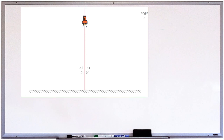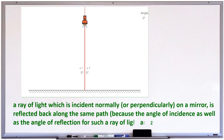Here, the incident ray is perpendicular to the plane mirror — that is, the angle of incidence is 0 degrees, and the angle of reflection is also 0 degrees. What we conclude: a ray of light which is incident normally or perpendicularly on a mirror is reflected back along the same path, because the angle of incidence as well as the angle of reflection for such a ray of light are both 0.